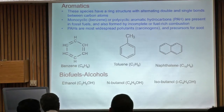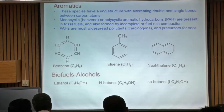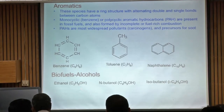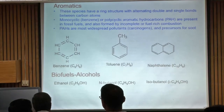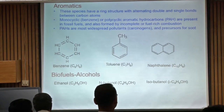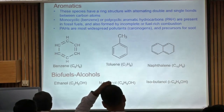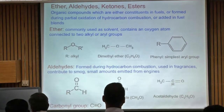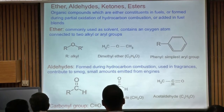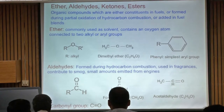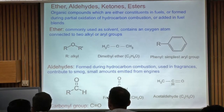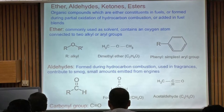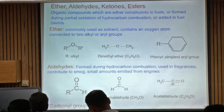Biofuels like ethanol and butanol: if you know how to write the structure of ethane C₂H₆, you just replace one H with an OH group to get ethanol. The same approach applies to butanol and even higher alcohols like decanol. Esters and ethers like dimethyl ether are also used as fuels because they are oxygenated fuels, and some are produced as intermediates during combustion of other fuels.